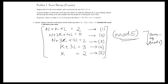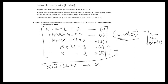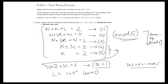We now know k = 2. Substituting into equation 4: 2 + 3l = 3, so 3l = 1. Therefore l = 1 × 3⁻¹ mod 5. The inverse of 3 mod 5 is 2, because 3 × 2 = 6 ≡ 1 mod 5. Therefore l = 1 × 2 = 2. So k = 2 and l = 2.